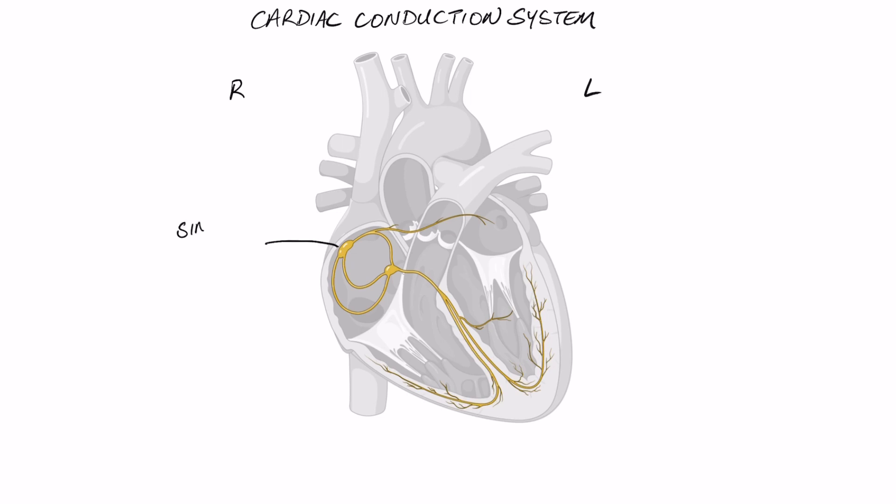So the yellow there is the conduction pathway and we're going to start right at the start at the right atrium where we will find the sinoatrial or the SA node. So the SA node is basically just a collection of specialized pacemaker cells and you're going to find these on the wall of the right atrium.